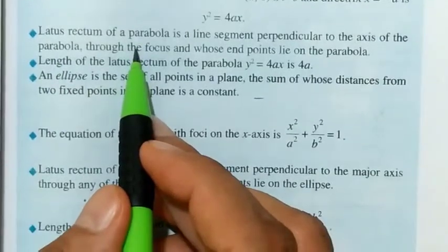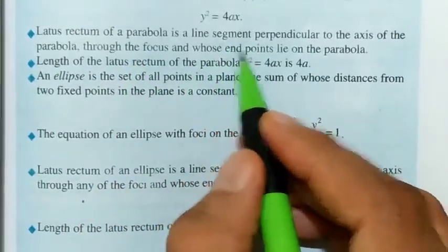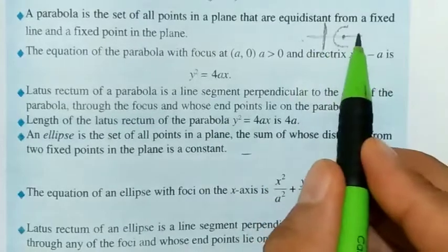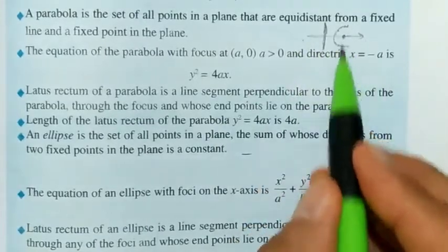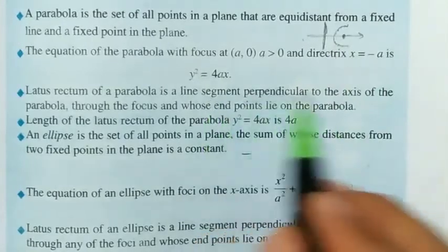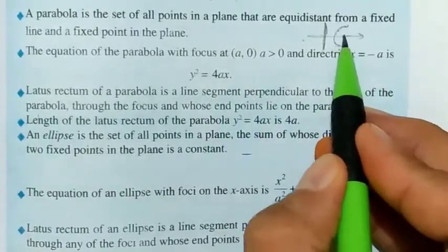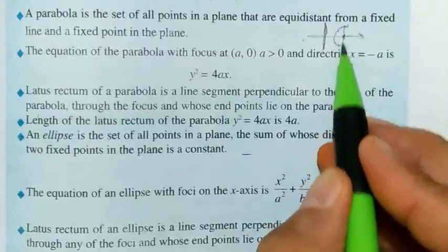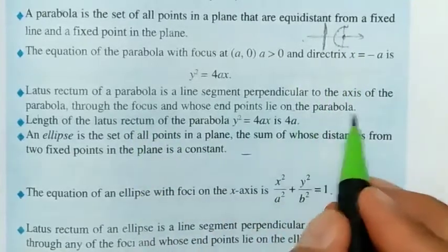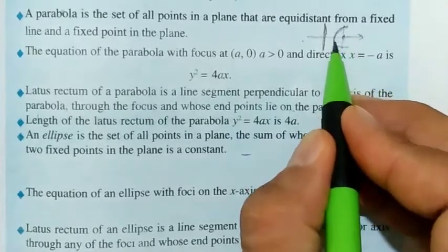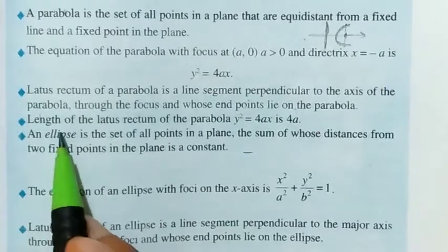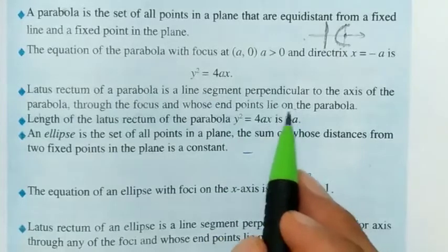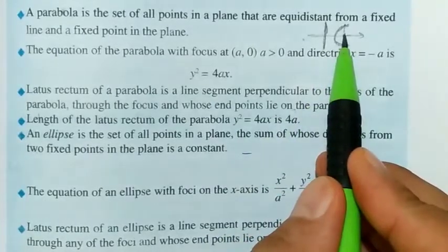The latus rectum of a parabola is the line segment perpendicular to the axis of the parabola and passing through the focus, whose endpoints lie on the parabola. The length of the latus rectum of the parabola y² = 4ax is 4a — that is, four times the x-coordinate of the focus.